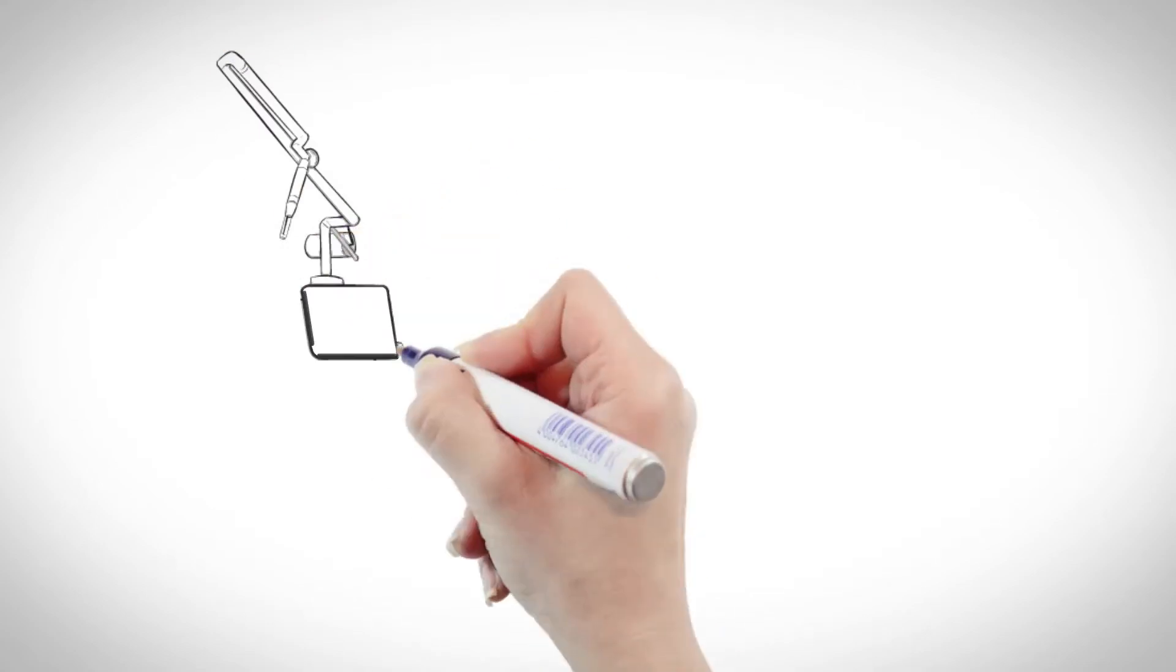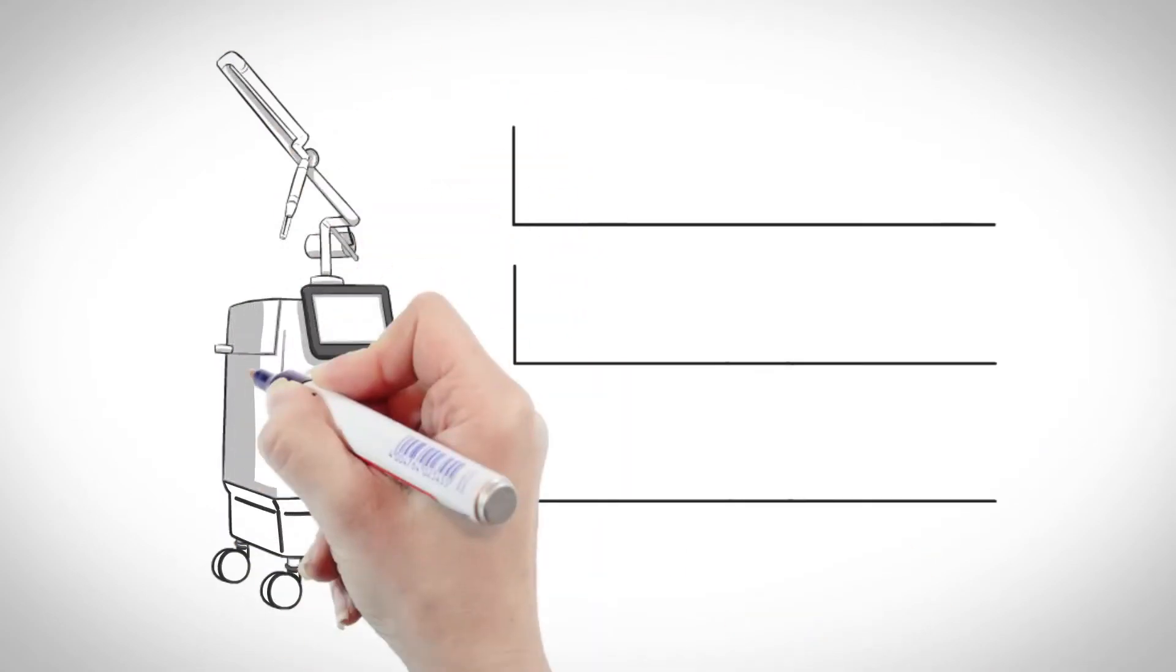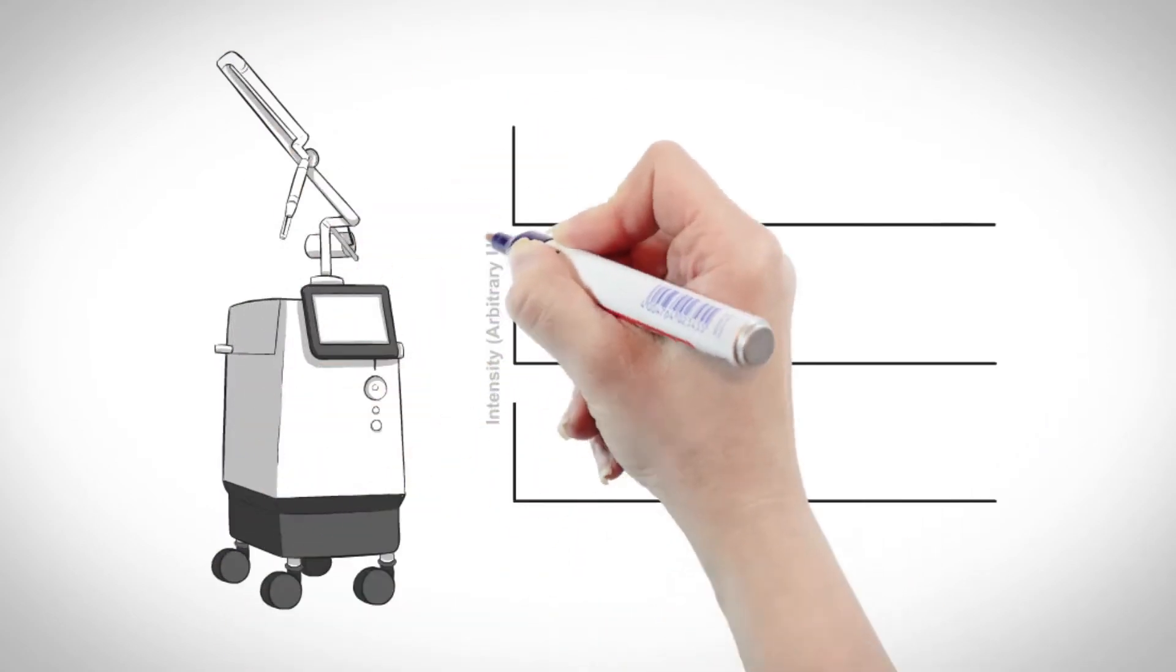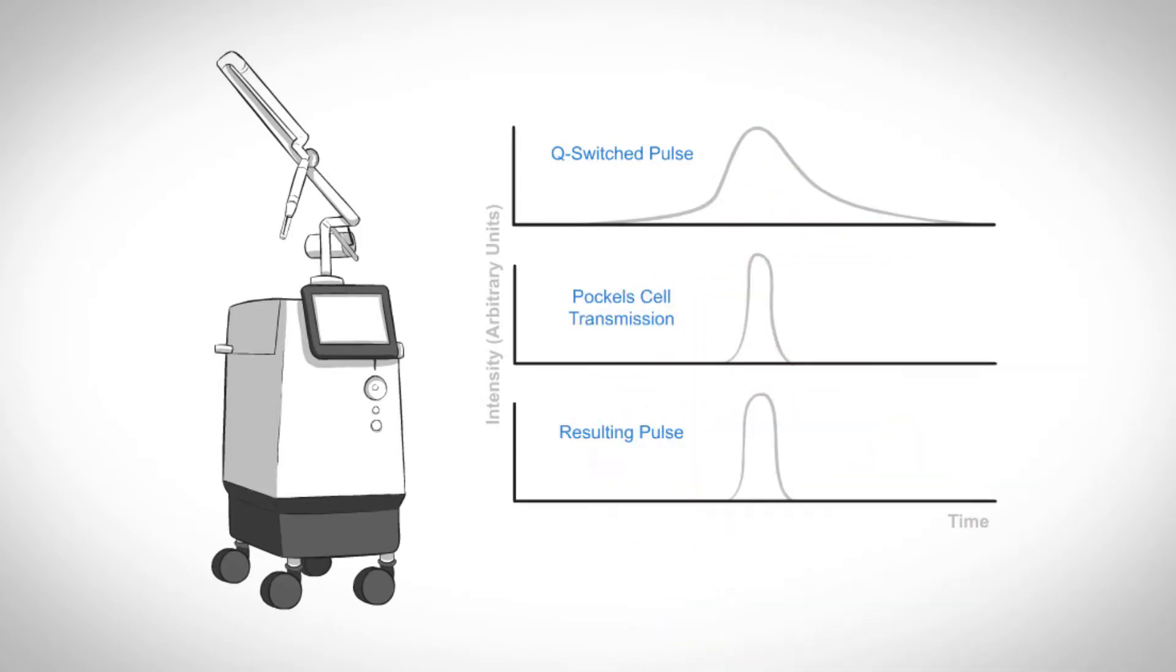But some picosecond laser manufacturers use a technique called pulse slicing to make slower Q-switched nanosecond pulses appear to be in the shorter picosecond range.